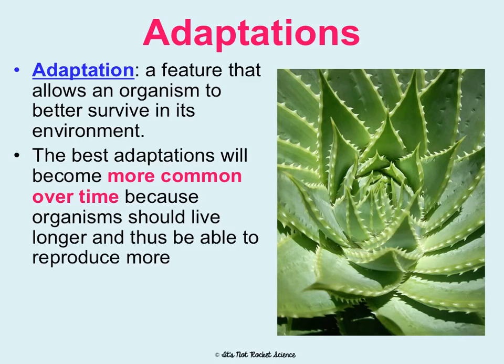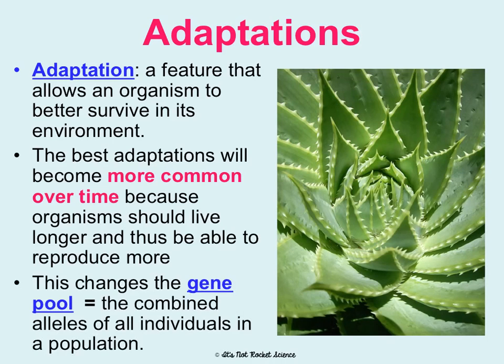What we should see is that the best adaptations become more common over time, because organisms with the best adaptations should be living longer — thus able to reproduce more — thus passing on their genes more. This will eventually change the gene pool. The gene pool is all the combined alleles of all individuals in a population. So if we're looking at all the genes of ducks in a pond, the gene pool would be all those different options, and we should see that gene pool change.